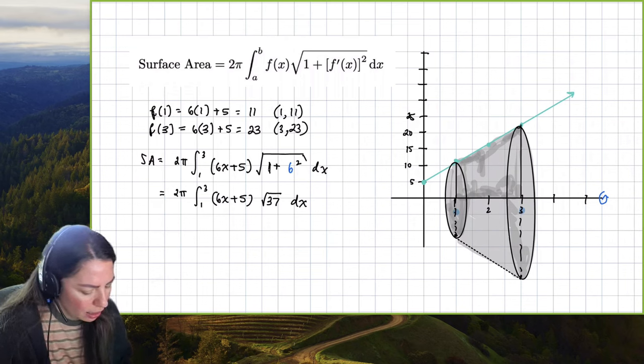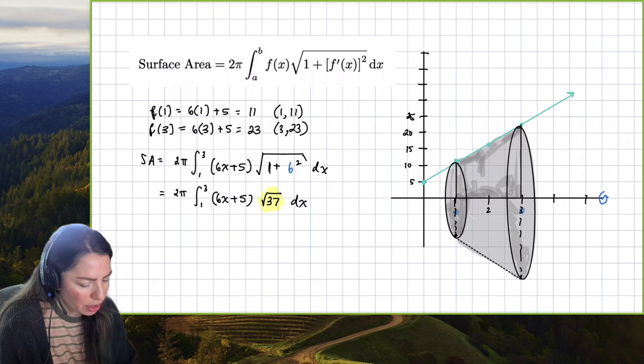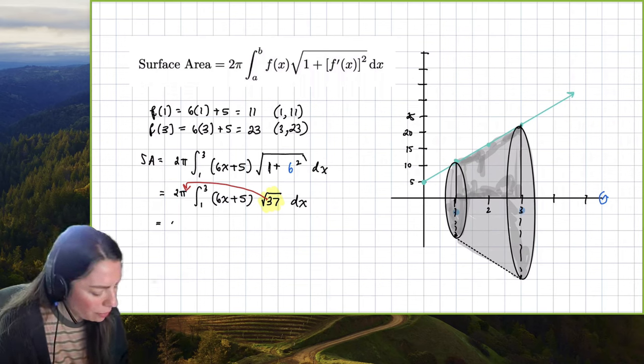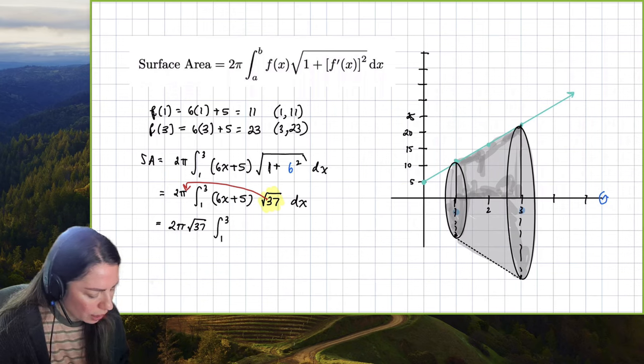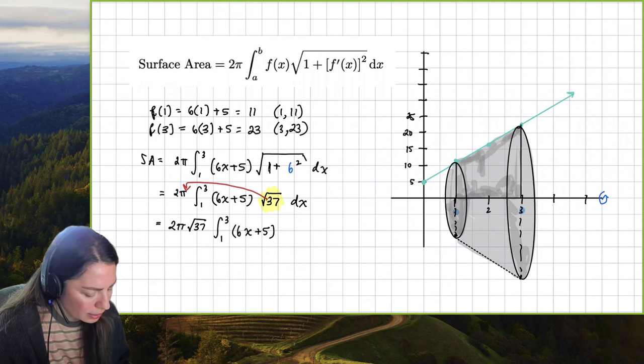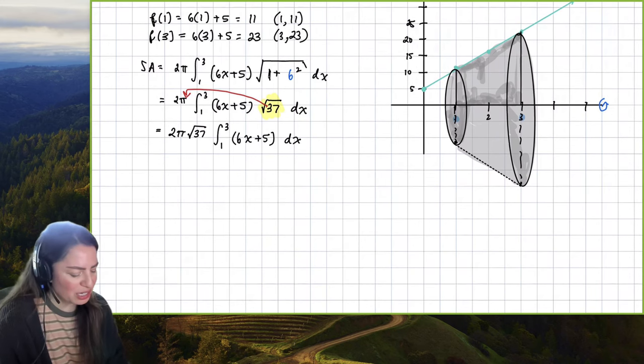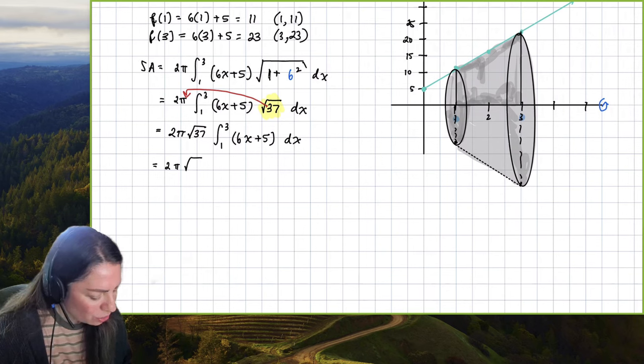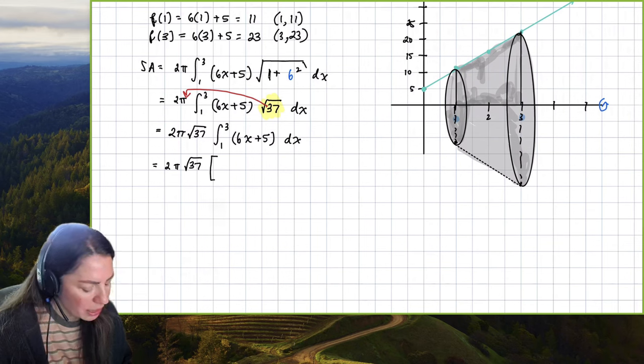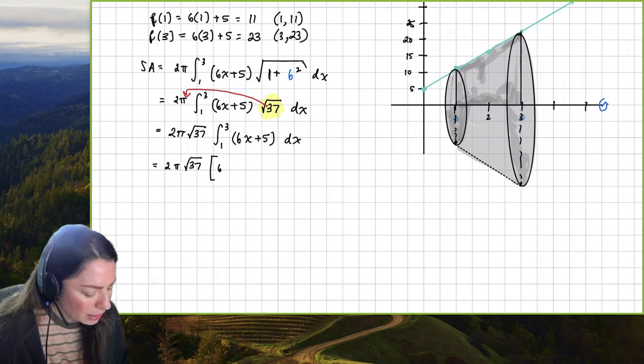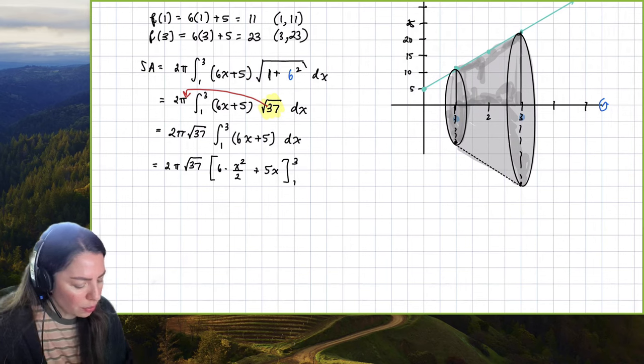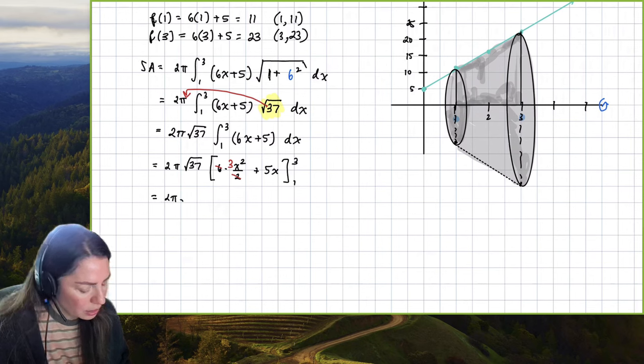Since this is a number coefficient, I'm going to go ahead and bring that out as the constant multiple rule and put it out there with the 2π. So that way we get 2π times the square root of 37 definite integral 1 to 3 of the line 6x plus 5 dx. And we know how to integrate this, we can almost blink and do it. So there we get 2π√37 times, and now let's go ahead and integrate. We get 6 times x squared over 2 plus 5x evaluated from 1 to 3. And we'll go ahead and reduce that 2 into 6.